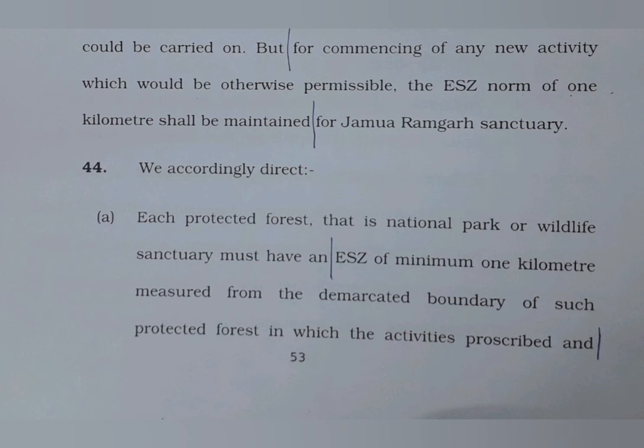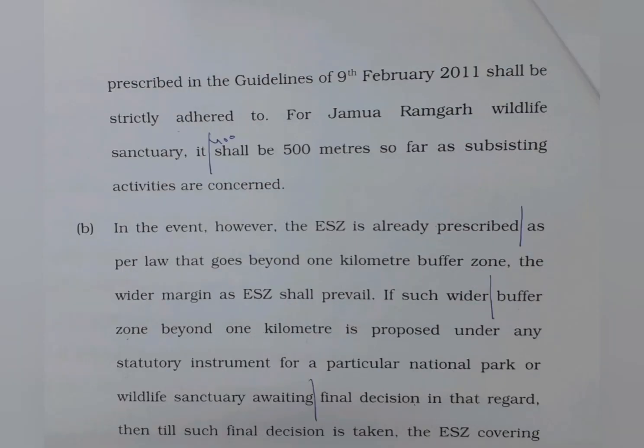We accordingly direct: each protected forest, that is National Park or Wildlife Sanctuary, must have an ESZ of minimum 1 km measured from the demarcated boundary of such protected forest, in which the activities prescribed and prohibited in the guidelines of 9 February 2011 shall be strictly adhered to. For Jammua Ramgad Sanctuary, it shall be 500 meters so far as subsisting activities are concerned.